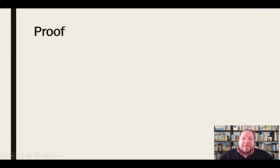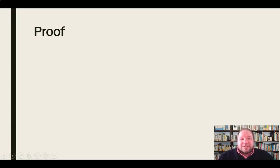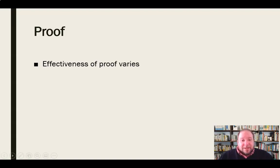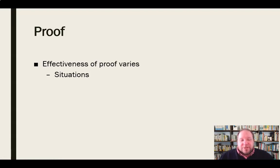When we talk about content premises, we need to talk about proof, because that's what the audience is looking for in these logical elements. They want proof. They want to know for sure what it is you're saying. They want evidence of that. So we need to understand, first of all, that the effectiveness of proof varies due to a variety of factors. The effectiveness of proof will not be stable from one situation or one person to the other.